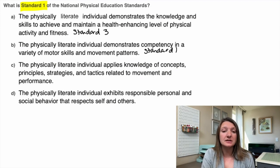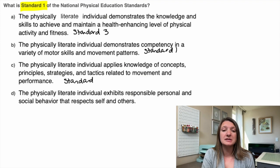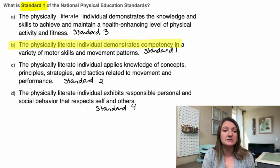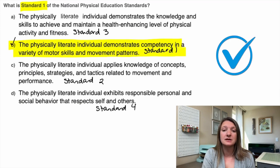C, the physically literate individual applies knowledge of concepts, principles, strategies, and tactics related to movement and performance — this is standard two. D, the physically literate individual exhibits responsible personal and social behavior that respects self and others — this is standard four. So our answer is standard one is B: the physically literate individual demonstrates competency in a variety of motor skills and movement patterns.